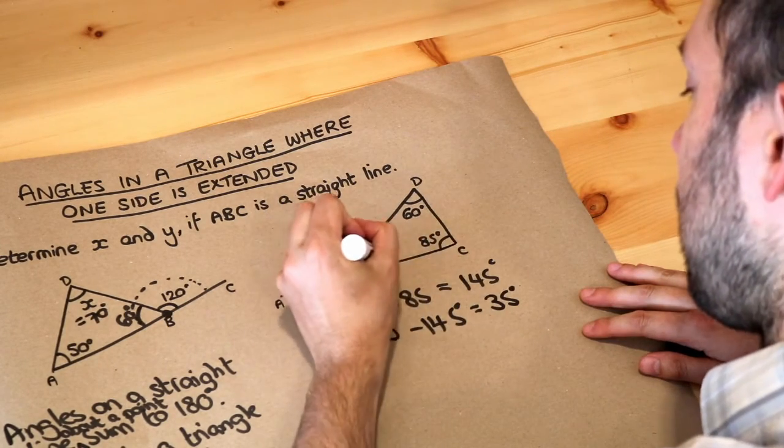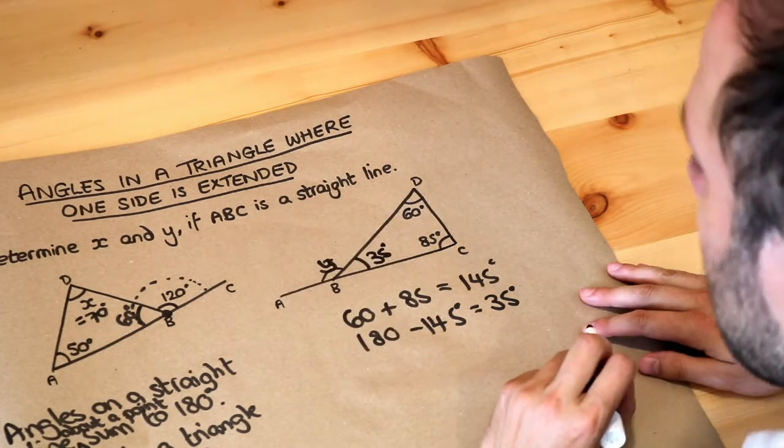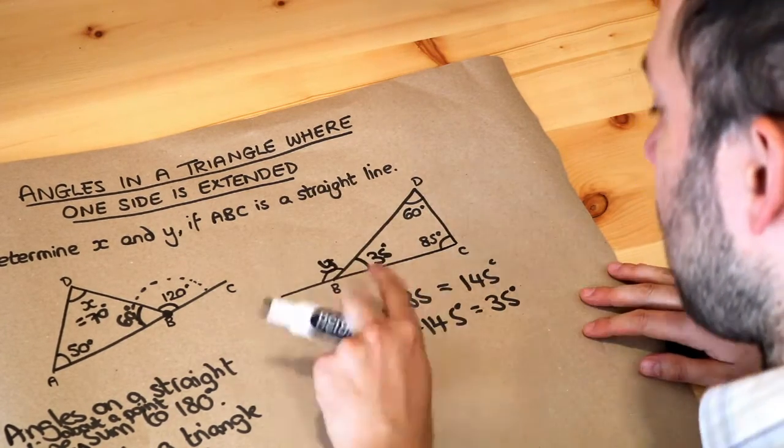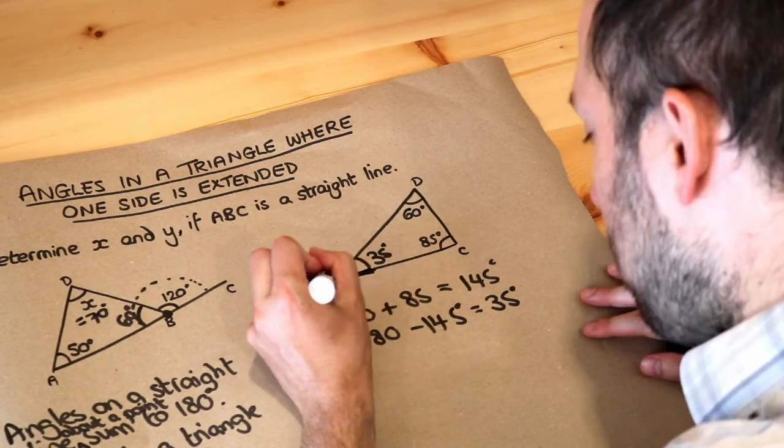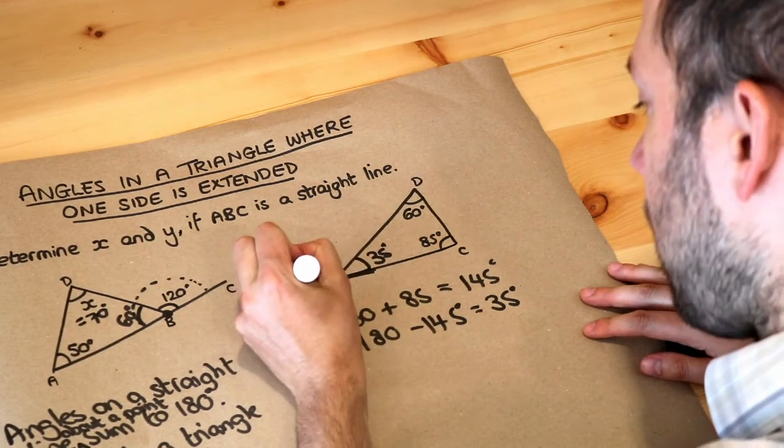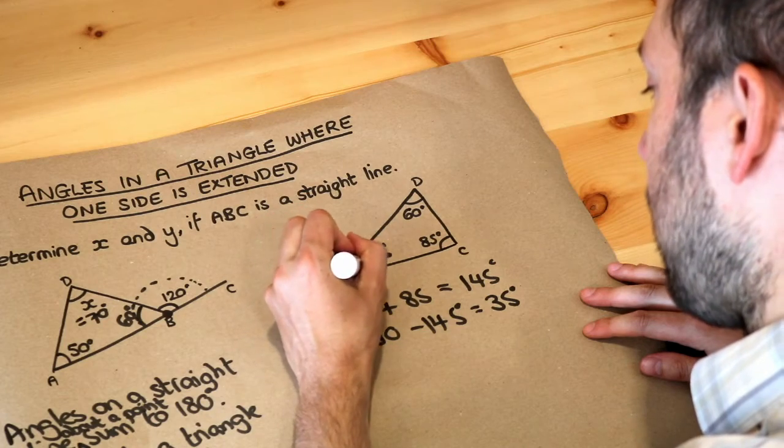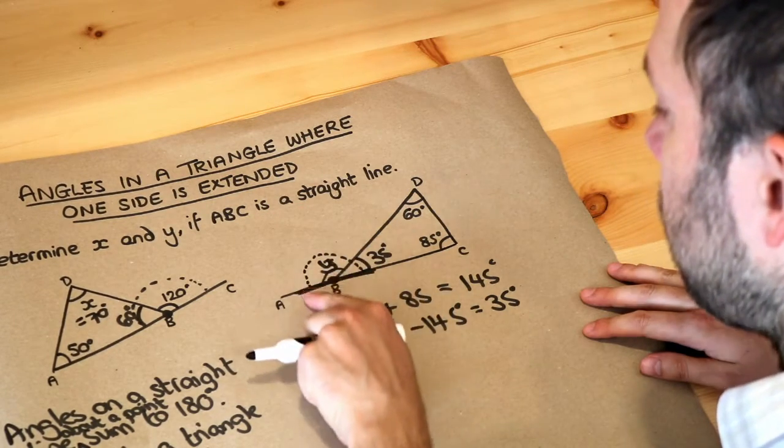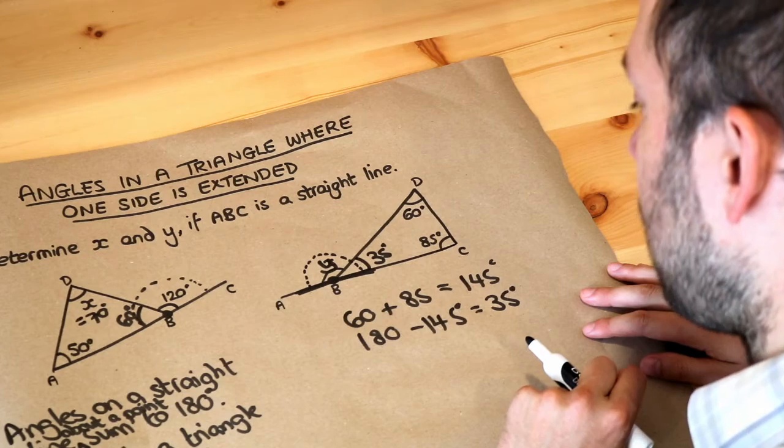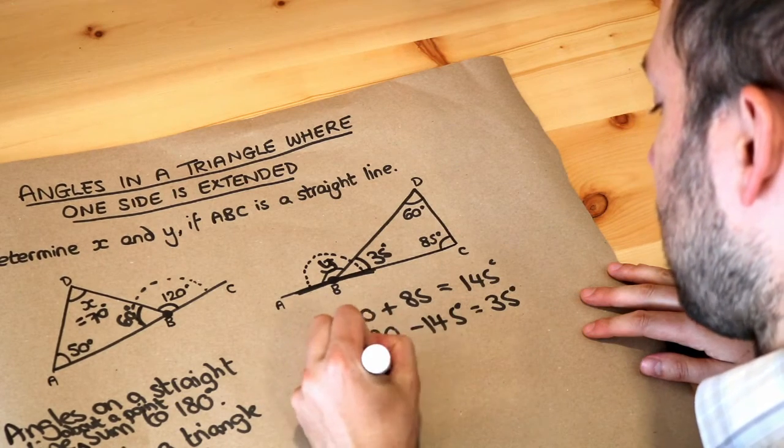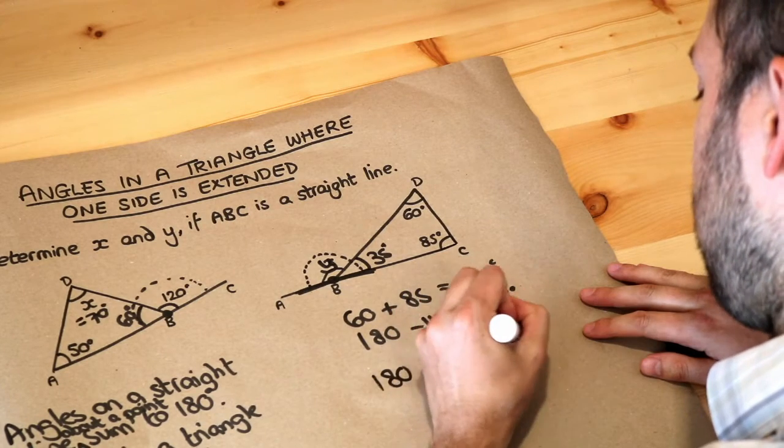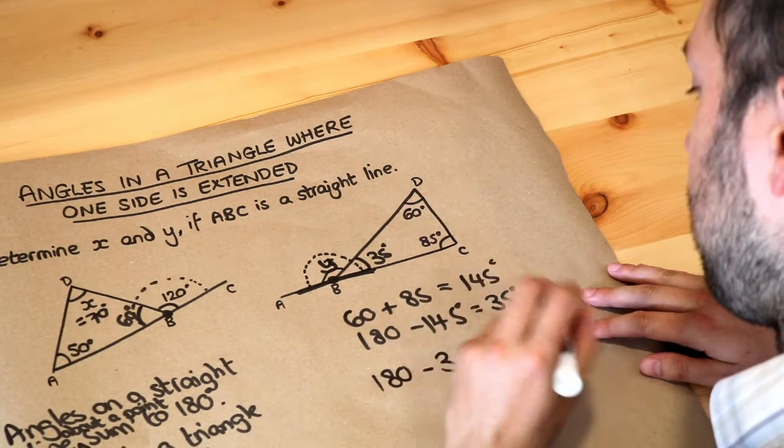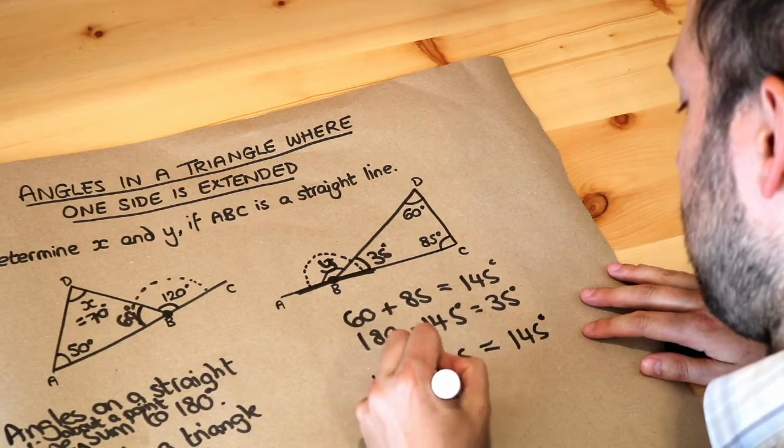So we know that this angle here is 35 degrees and now if we look at this straight line here and this point B, we know that the angles about the point B on that straight line, that total angle is 180. So we just need to do 180 minus that 35 and that gives you 145 degrees. So y is 145.